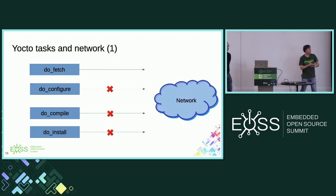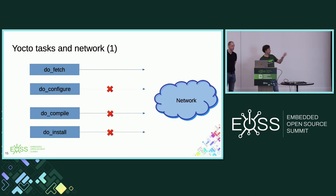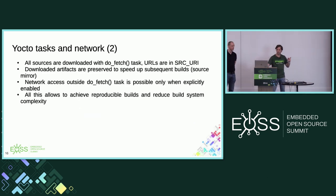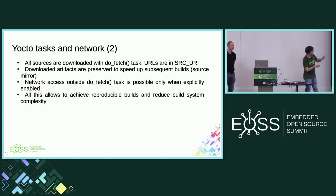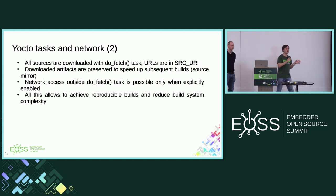In the recent Yocto version — in the latest LTS, at least Kirkstone and further — there is no network access during do_configure or do_compile. You can only fetch the sources once, get all the network access you need during do_fetch, and then there's no network access by default. All sources are loaded during the fetch task and then preserved to speed up subsequent builds. Network access outside of do_fetch is possible but you have to specifically enable it. This allows reproducible builds and speeds up subsequent builds.